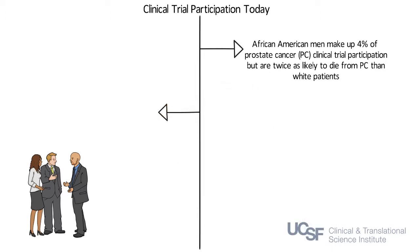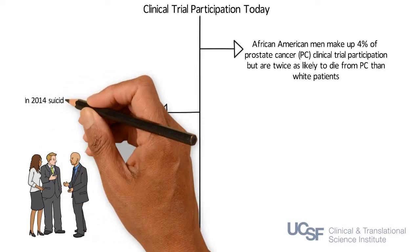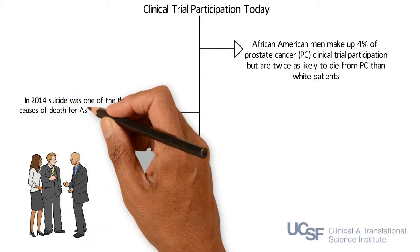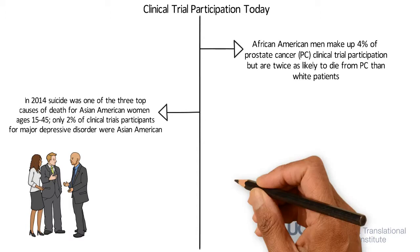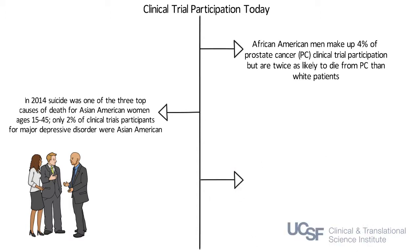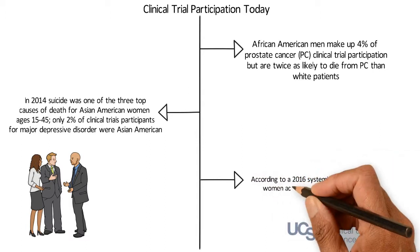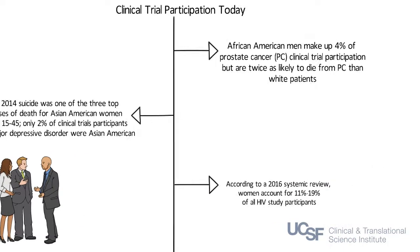In 2014, suicide was one of the top three causes of death for Asian American women ages 15 through 45. However, only 2% of clinical trial participants for major depressive disorder were Asian American. A 2016 systematic review revealed that women are underrepresented in HIV research, accounting for 11 to 19% of all study participants, a rate that is far less than the prevalence of women living with HIV.